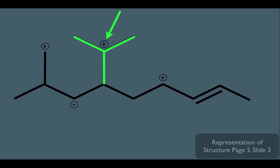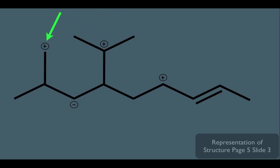Now let's do the same analysis to this carbon right here. How many hydrogens? It has a positive formal charge, so we count the bonds. It has one bond to the carbon below, which means it must therefore have two hydrogens directly connected to it to make the total of three bonds.